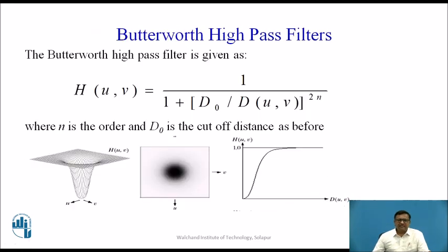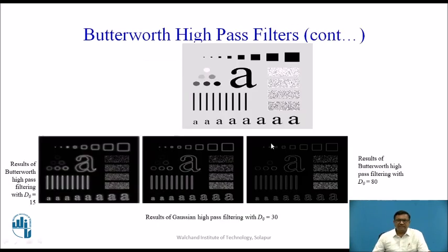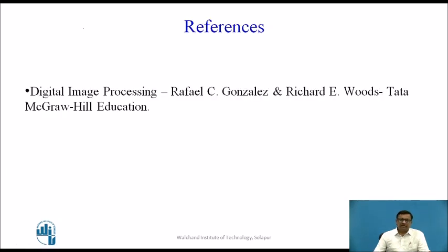Similarly, we can have a Butterworth High Pass Filter. Its transfer function and three representations are shown. The result of the Butterworth High Pass Filter: with radius 15, radius 30, and radius 80, we again see that radius 30 is most appropriate for the Butterworth high pass filter as well. References: Digital Image Processing by Rafael C. Gonzalez and Richard E. Woods, Tata McGraw Hill Education.